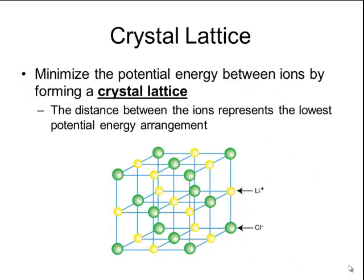When these ions come together to form formula units, they minimize their potential energy between the ions by forming a crystal lattice. Just like with molecular compounds, the distance between the ions in the crystal lattice represents that lowest potential energy arrangement. Here's a picture of a crystal lattice involving lithium ions and chloride ions. Notice that one lithium ion is surrounded on all sides by chloride ions, and the same is true for a chloride ion. This repeated arrangement of lithium ions and chloride ions forms the crystal lattice.